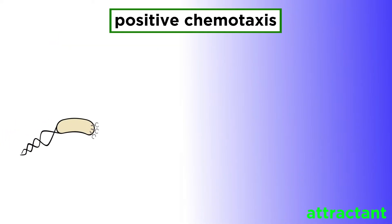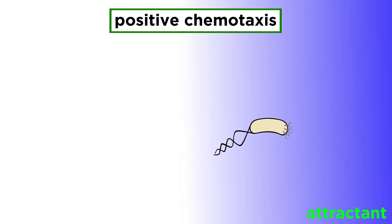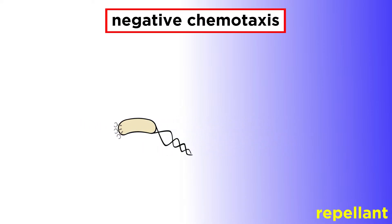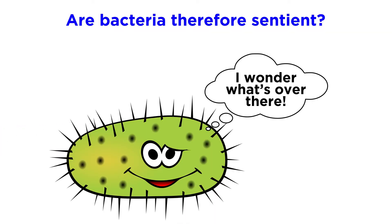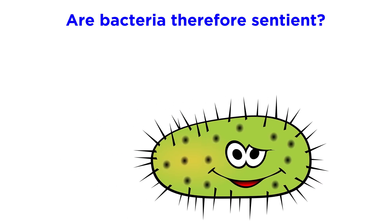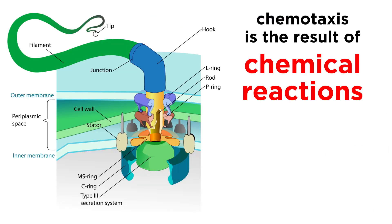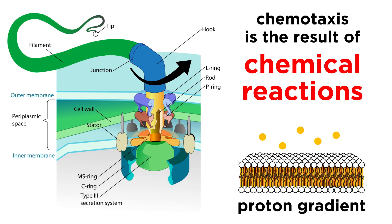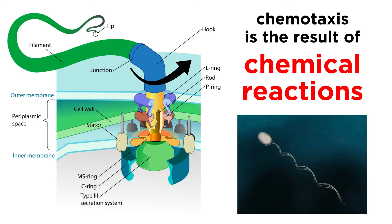Chemotaxis can be positive, towards some kind of nutrient, or it can be negative, away from something toxic or dangerous. The result appears as though the bacterium is swimming with some kind of sentience or awareness, but in reality it is just a series of chemical reactions that results in the rotation of a flagellum. The motor interacts with a proton gradient, such that it and the hook turn, and the attached filament rotates in a way that propels the cell in a particular direction.